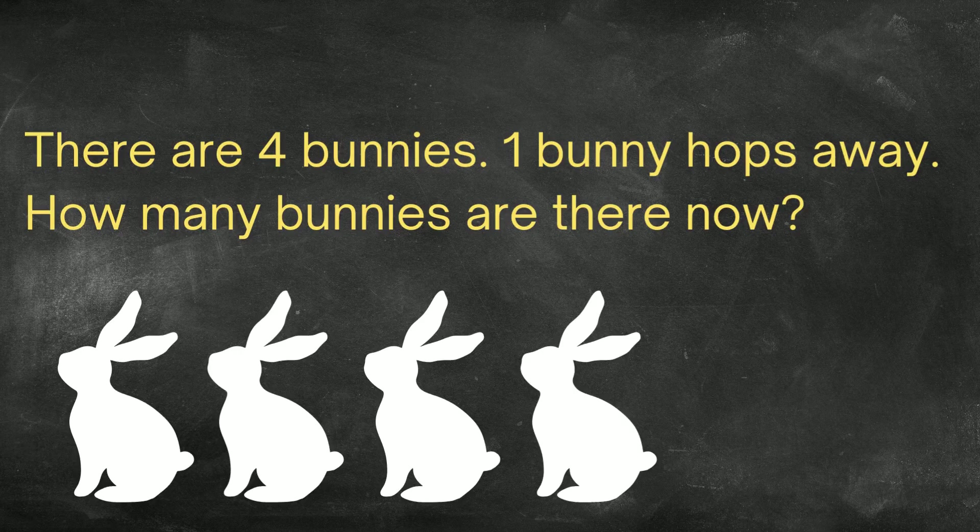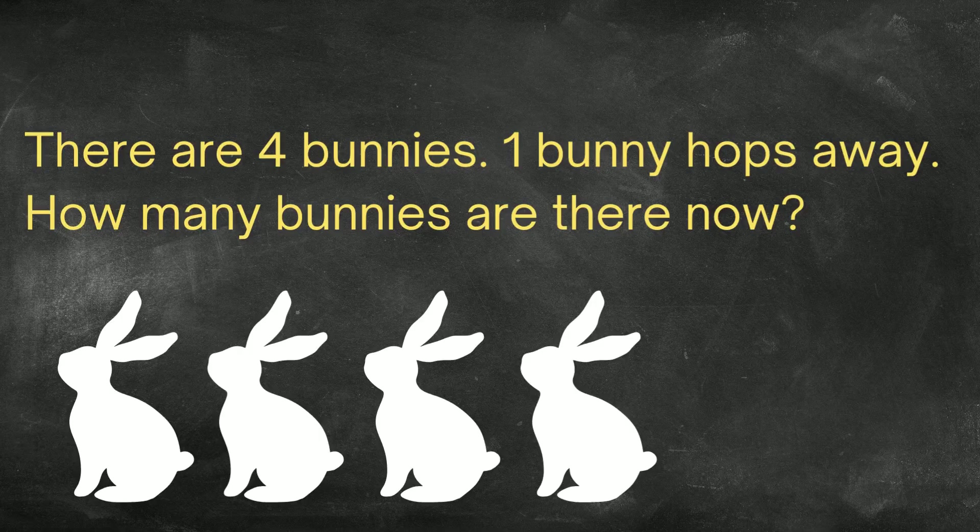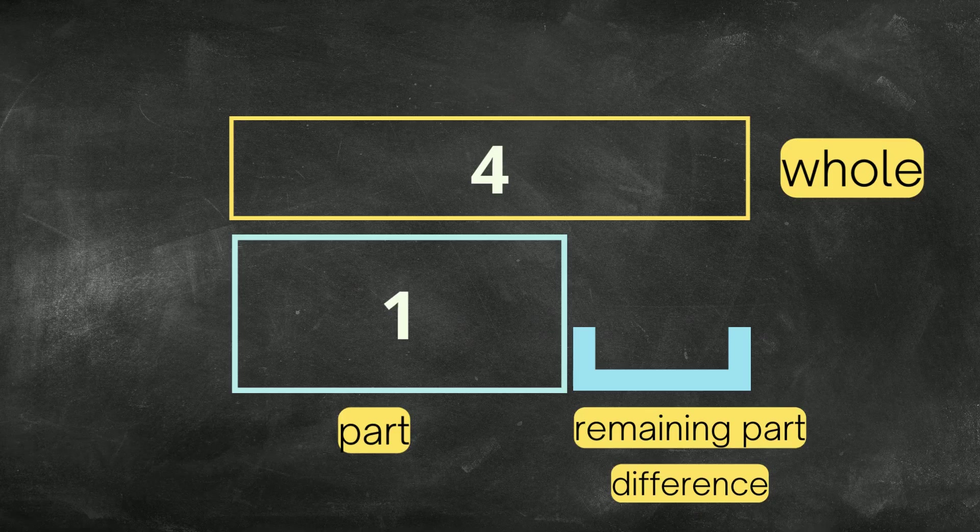Remember, before we start answering a word problem, we should break it up. So the first part says that there were 4 bunnies and one hopped away. There he is. He's hopping away.